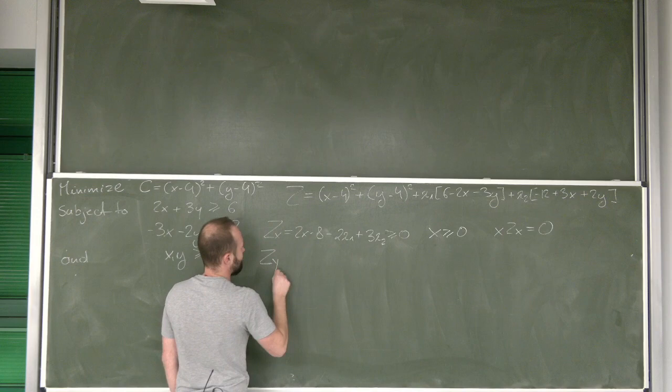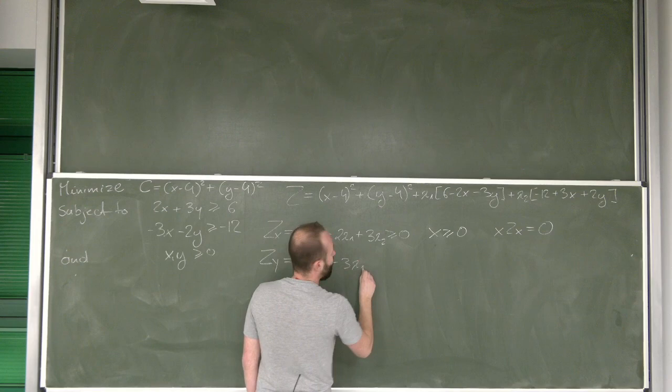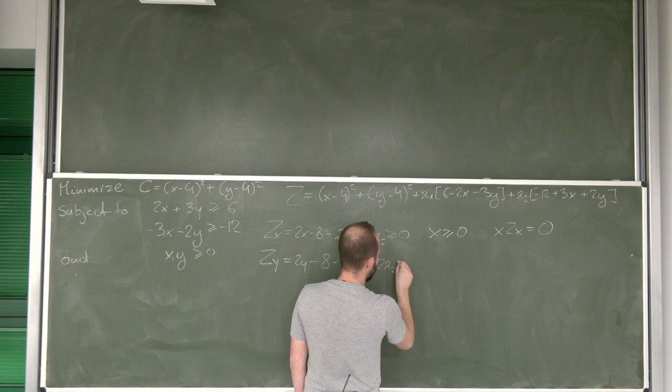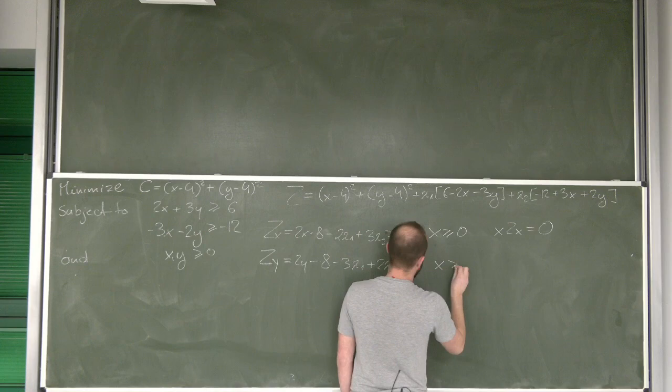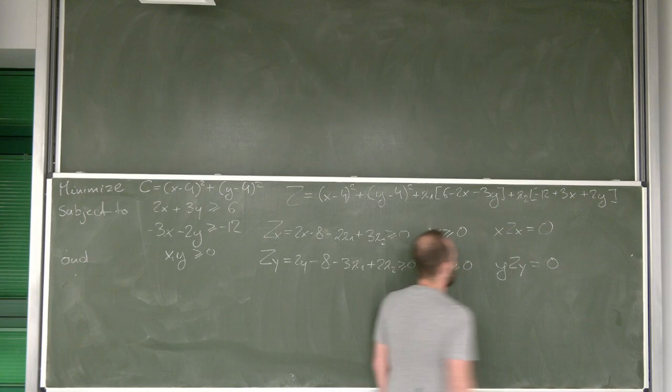Then we differentiate the function with respect to y. We get that this is 2y minus 8 minus 3 lambda 1 plus 2 lambda 2. And this also needs to be bigger than 0. So, y needs to be non-negative. And due to complementary slackness, one of the two expressions needs to be equal to 0.